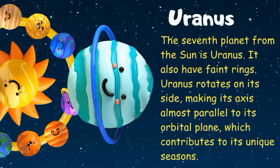Uranus is the seventh planet from the sun. It also has faint rings. Uranus rotates on its side, making its axis almost parallel to its orbital plane, which contributes to its unique seasons.